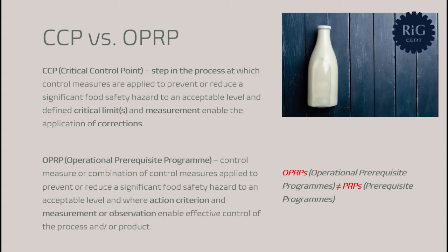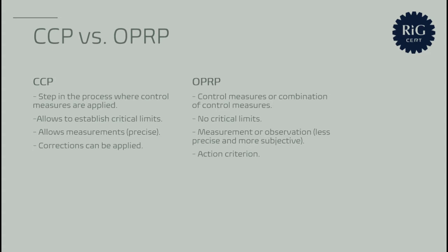A CCP is a step in the process — such as the reception of raw materials, freezing, or baking, depending on the food product — at which control measures are applied to prevent or reduce a significant food safety hazard to an acceptable level. The CCP should also allow the establishment of critical limits and measurement so that if the control fails, corrections can be applied. In summary, the characteristics of a CCP are: a step in the process where controls can be applied, where critical limits can be set, measured, and corrections applied if needed. At a CCP, it is possible to measure precisely, detect, and correct any failures of the controls in place.